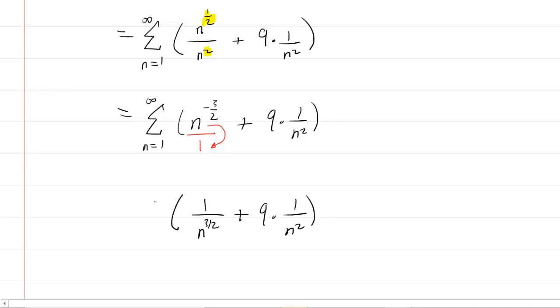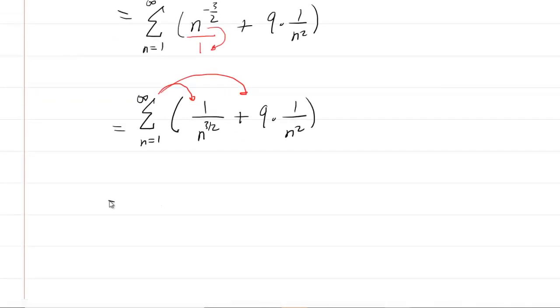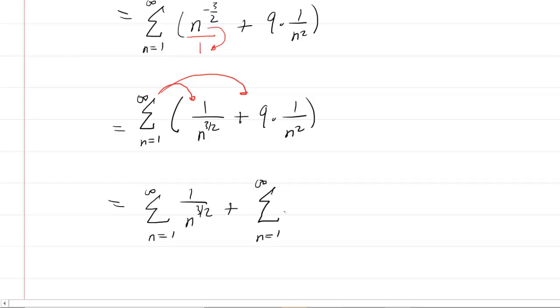Now we'll distribute the sigma, which is a perfectly legitimate maneuver. This gives us the sum of two distinct p-series: 1 over n to the 3/2, and 9 times 1 over n squared. We can factor the 9 out.